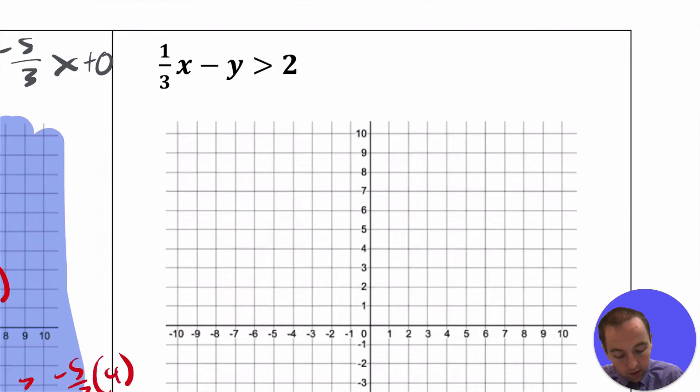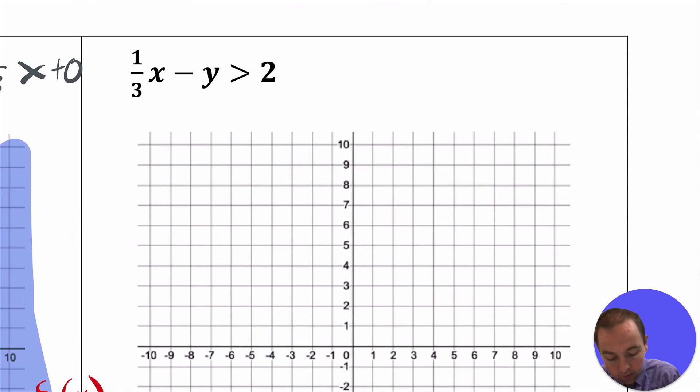And then for the other example right here, let's solve it for y. So let's subtract 1 third x on both sides. That does not flip the inequality symbol because we're subtracting. We end up getting that. And then we'll have to multiply or divide by negative 1 on both sides. That will flip the inequality symbol. So we're going to end up with y is less than positive 1 third x minus 2. That right there we'll want to graph.